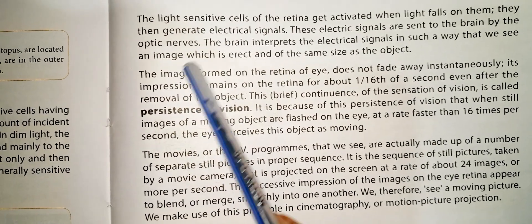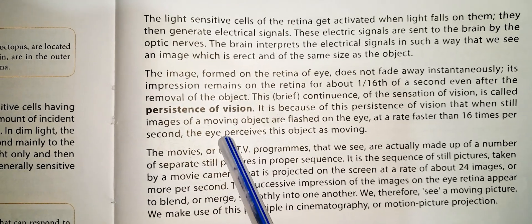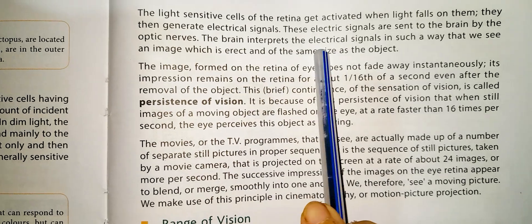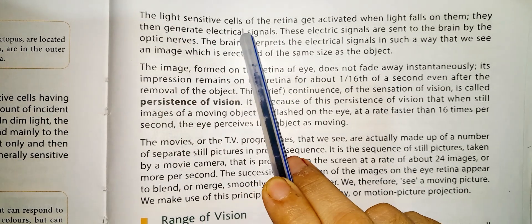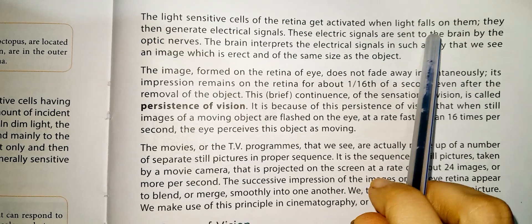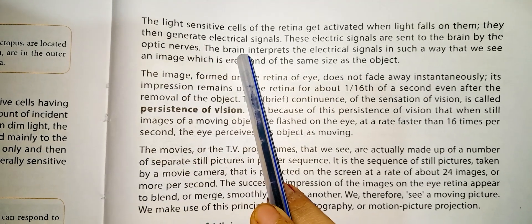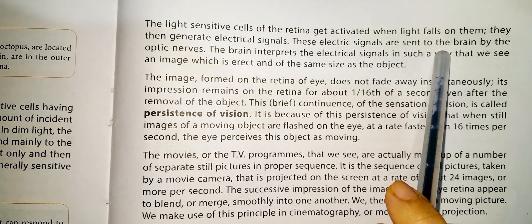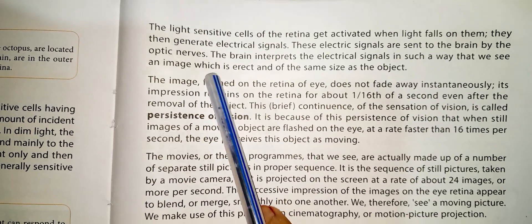The light-sensitive cells of the retina are activated when light falls on them, and they generate electrical signals. These electrical signals are sent to our brain by the optic nerve.